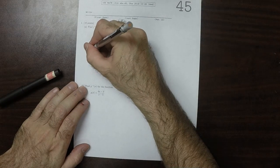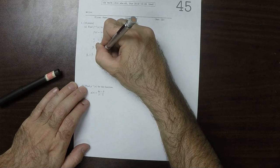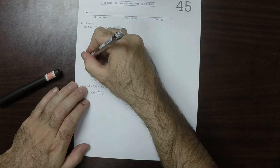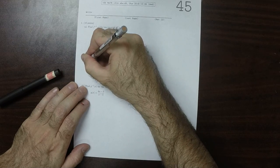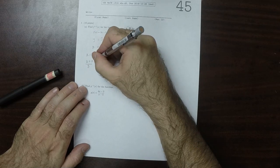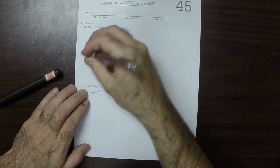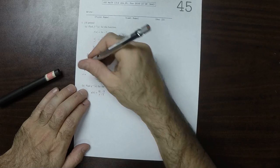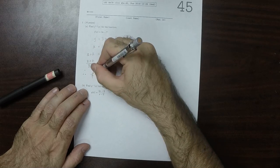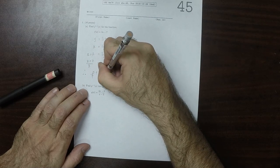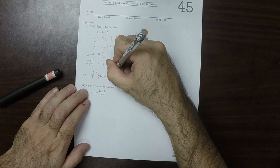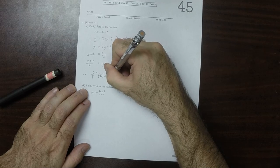And now we'll solve for y. So x plus 7 is 3y. So x plus 7 over 3 is y. And therefore the inverse function is x plus 7 over 3.